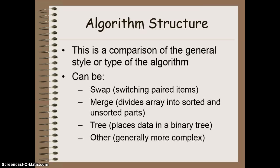Algorithm structure is a comparison of the general style or the type of algorithm — what is the underlying mechanism used to sort our array? We can have a swap sort, which is when you take two items and swap the positions they contain in the array. We can have a merge sort, which divides our array into an unsorted portion and a sorted portion, and then we try and take each unsorted element and put it into the sorted position until our whole array becomes sorted. We also have a tree sort, which places data in a binary tree — you have one piece of data at the top and then you can either go this way or that way. Each of those can branch further, so you can see how it's binary because you either go one way or another until eventually you get to a sorted array. There are some other algorithm structures out there that are a little bit more complex; we're not going to go into them in this course.